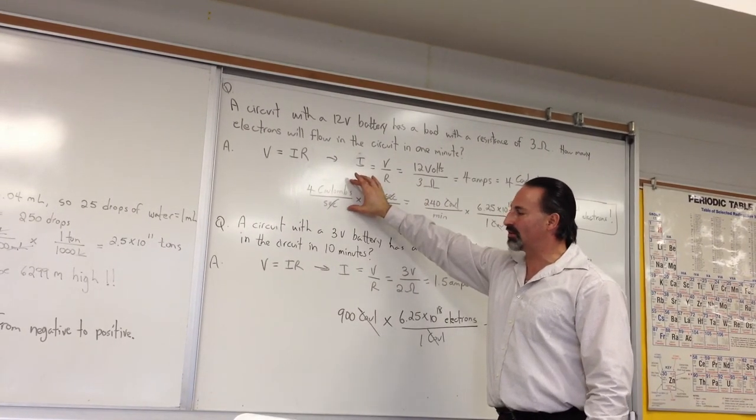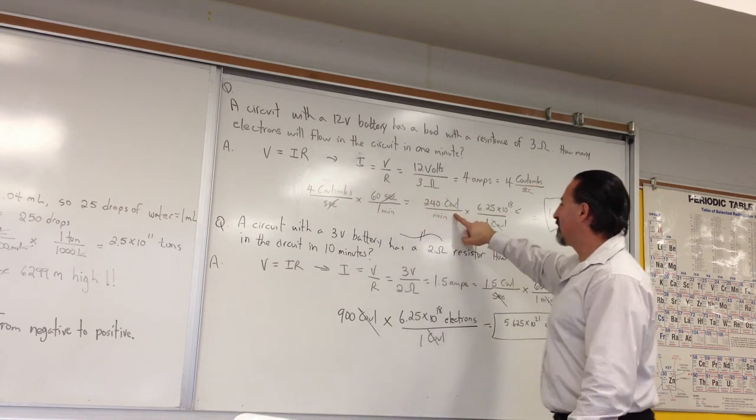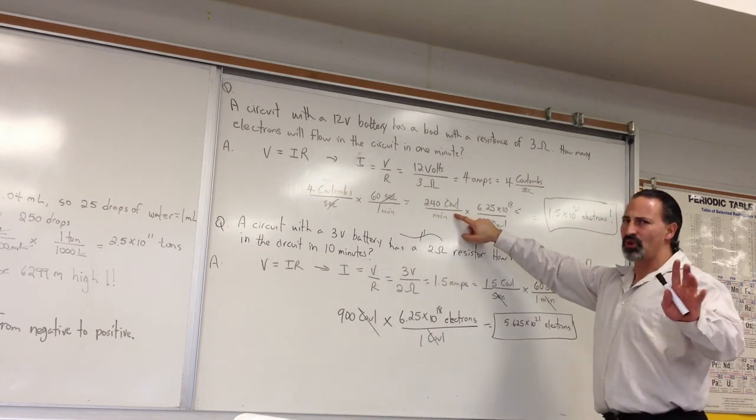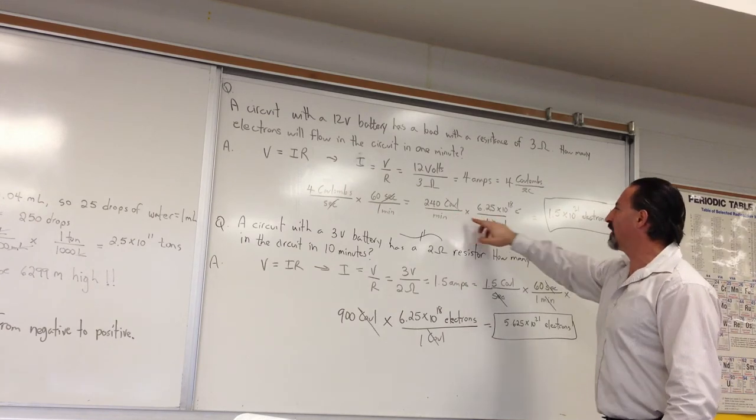So, we have 4 coulombs of electricity flowing through the wire per second, for 60 seconds. That means 240 coulombs per minute.